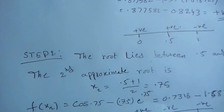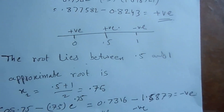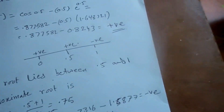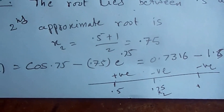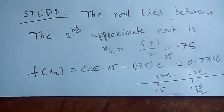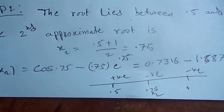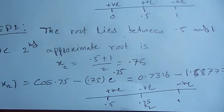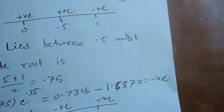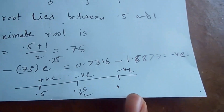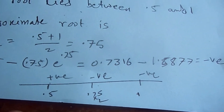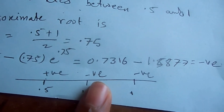The next step starts. Step 2: the root lies between 0.5 and 1. The second approximate root is the midpoint: (0.5 + 1) / 2 = 0.75. We compute f(x2) = cos(0.75) minus 0.75·e^0.75, which gives a negative value. At x=0.5 it is positive, at x=1 it is negative, and at x=0.75 it is negative. So the root lies between 0.5 and 0.75.